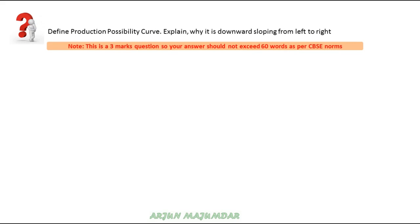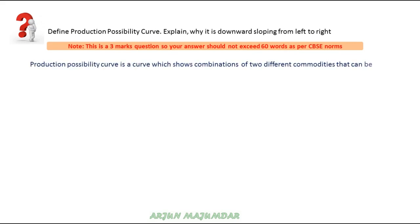The question is: define the production possibility curve and explain why it is downward sloping from left to right. We have to define the production possibility curve and tell the reason for the downward slope. This question is 3 marks, meaning 60 words.